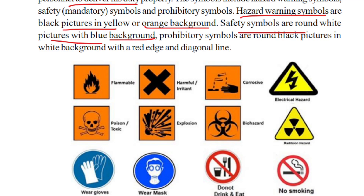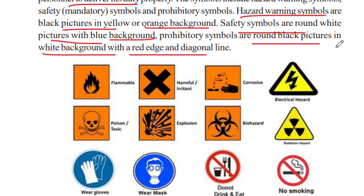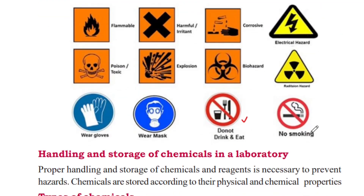Prohibitory symbols are round black pictures on a white background with red edges and diagonal lines. These indicate that something is prohibited here — for example, do not drink, do not eat, do not smoke.